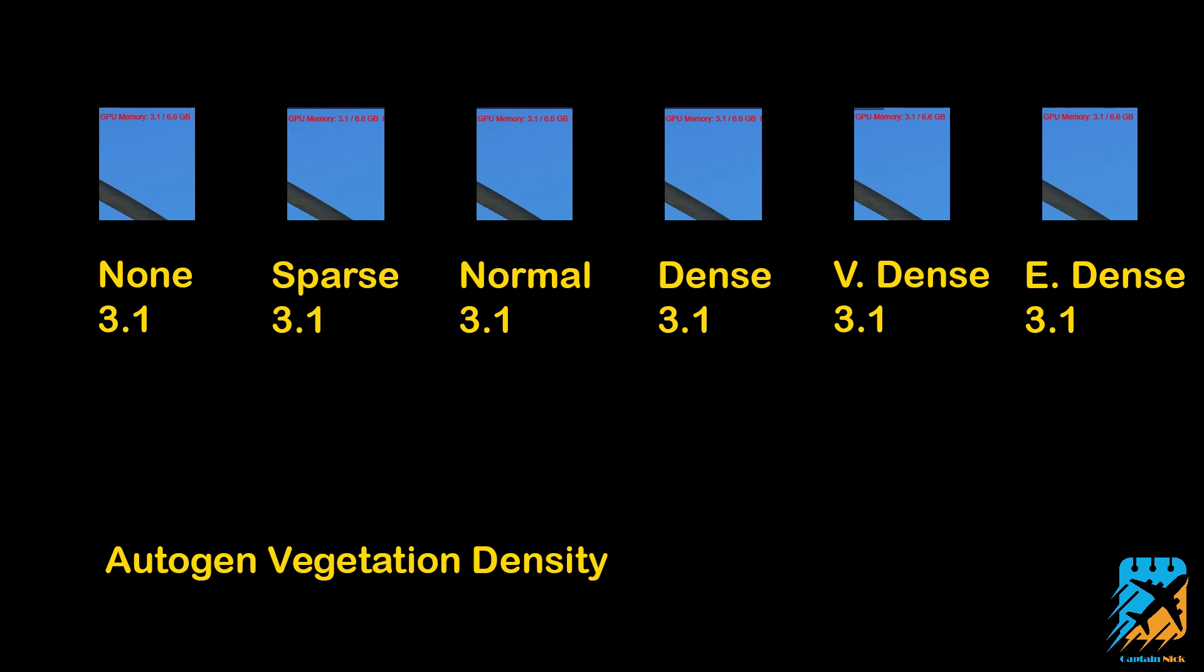Looking at auto-gen vegetation density, the next slider down. Once again, we got none at 3.1, sparse at 3.1, normal at 3.1, dense at 3.1, very dense at 3.1, and extremely dense at 3.1. What's weird is that the none is the same as extremely dense. Maybe it still loads the tree textures? I don't know. But it doesn't seem to make any difference as far as VRAM goes. Obviously once again, it's one of those things where your frame rate's going to take a hit, but do as you please with what you got as far as the computer goes.